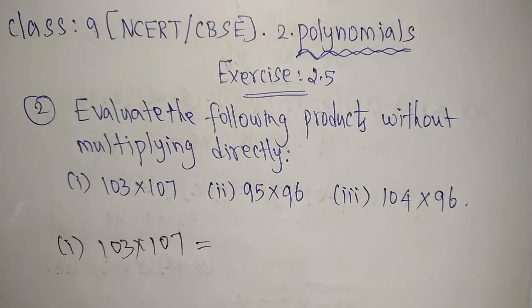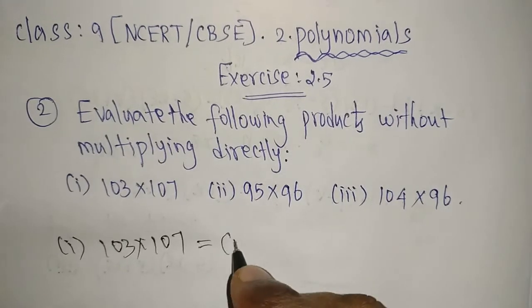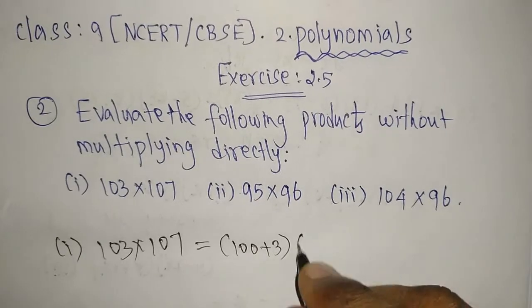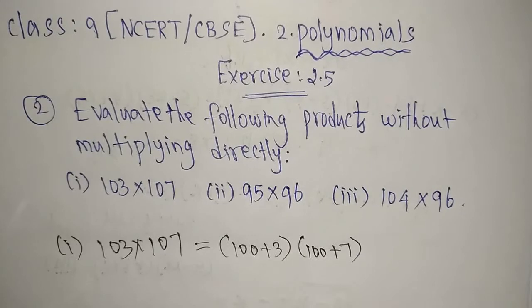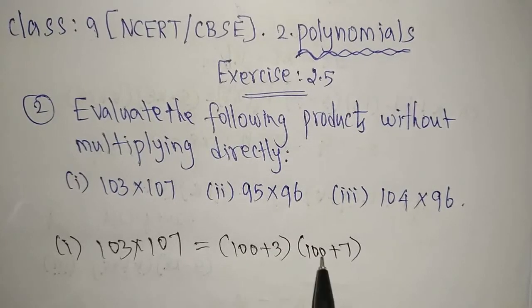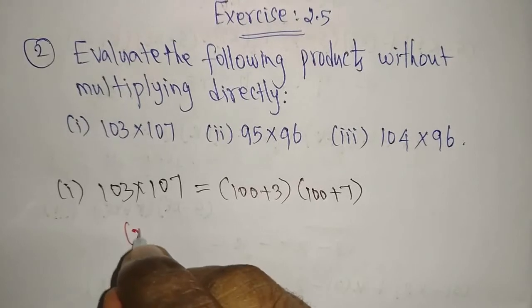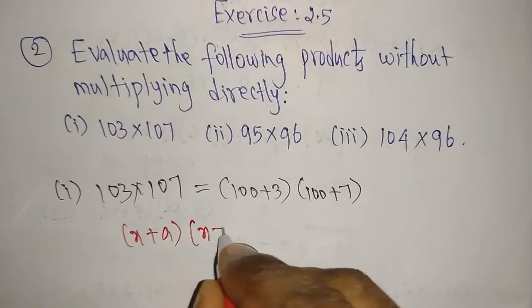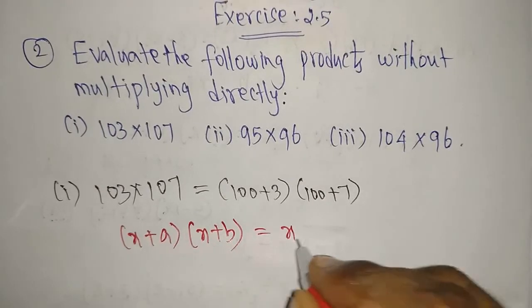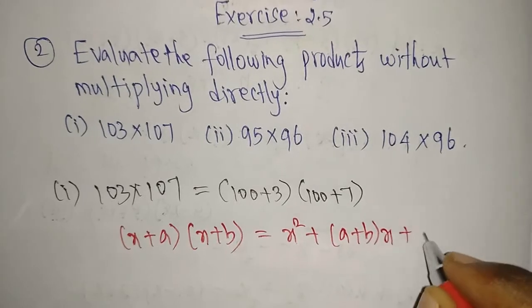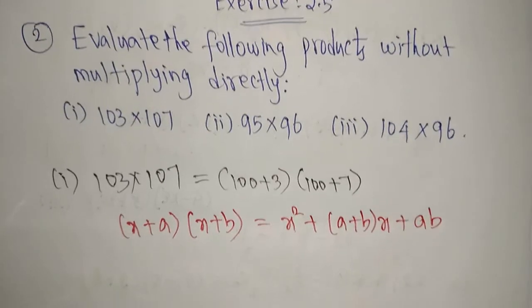By using an identity, we need to express this in the form of x plus a and x plus b. So 103 I am going to write as 100 plus 3, and 107 I am going to write as 100 plus 7. The first term 100 is common in both cases, so this is in the form of x plus a into x plus b. What is the formula for this? It is x squared plus a plus b into x plus a times b.